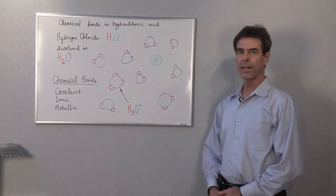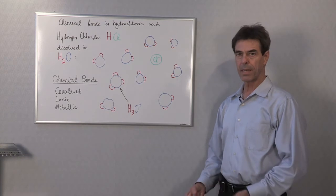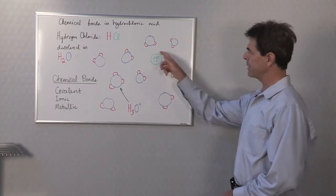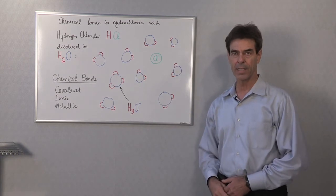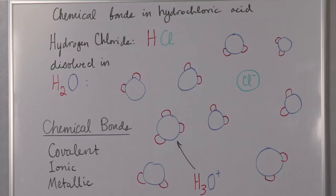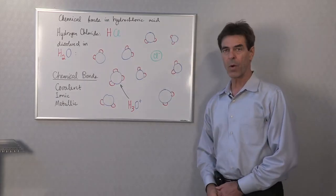Now dissolved in water, this bond is easily broken up and what happens is you have a chlorine ion because the electron sticks with the chlorine, and the leftover hydrogen atom, which has now lost an electron, is a proton, attaches itself to one of the water molecules.